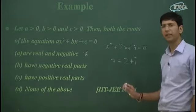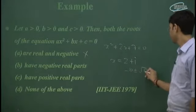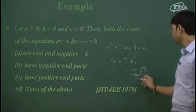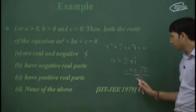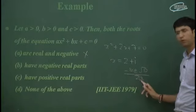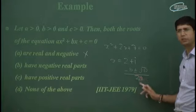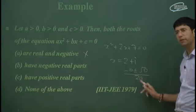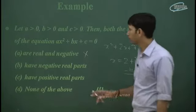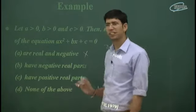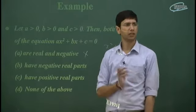We are saying that the negative real part relates to the imaginary case. So you can write minus b plus-minus root D divided by 2a. Real part is where it comes from — b by 2a is the real part. So if roots are complex, then real part is minus b by 2a. So b positive, a positive, then minus b by 2a is negative. So roots have negative real parts.